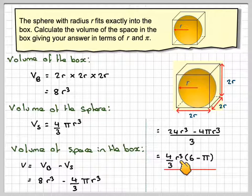So we get the final answer, 4 thirds r cubed bracket 6 minus pi. So this has been a video to show you how to find the space if you put a sphere that fits exactly into the box. I hope you've understood, and I thank you very much for watching.